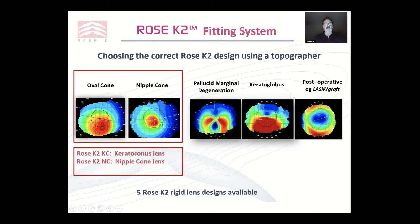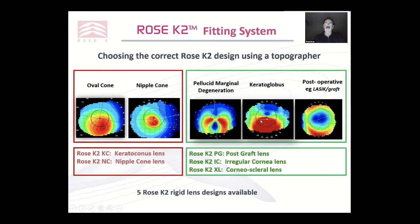If you have cones, as you see here on the left, typically the steepest part is the apex of the cone, which is central or paracentral, which means that every curve outside of that gets flatter and flatter. But that's not the case with post-operative conditions such as LASIK or graft, where often the flattest part of the cornea is central and then we have the steepest part just outside that, and then you flatten off in the periphery, which requires a completely different mindset as to how you fit it.